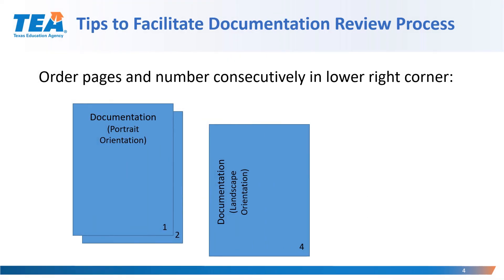Some tips to facilitate the documentation review process include ordering pages and numbering consecutively in the lower right-hand corner. It doesn't matter which orientation you use for your documentation. However, as in this example, you can see that the page numbers are not consecutively ordered correctly — we have 1, 2, and then 4. You would want to make sure that your pages are ordered and numbered consecutively in the bottom right corner, as shown in this example.